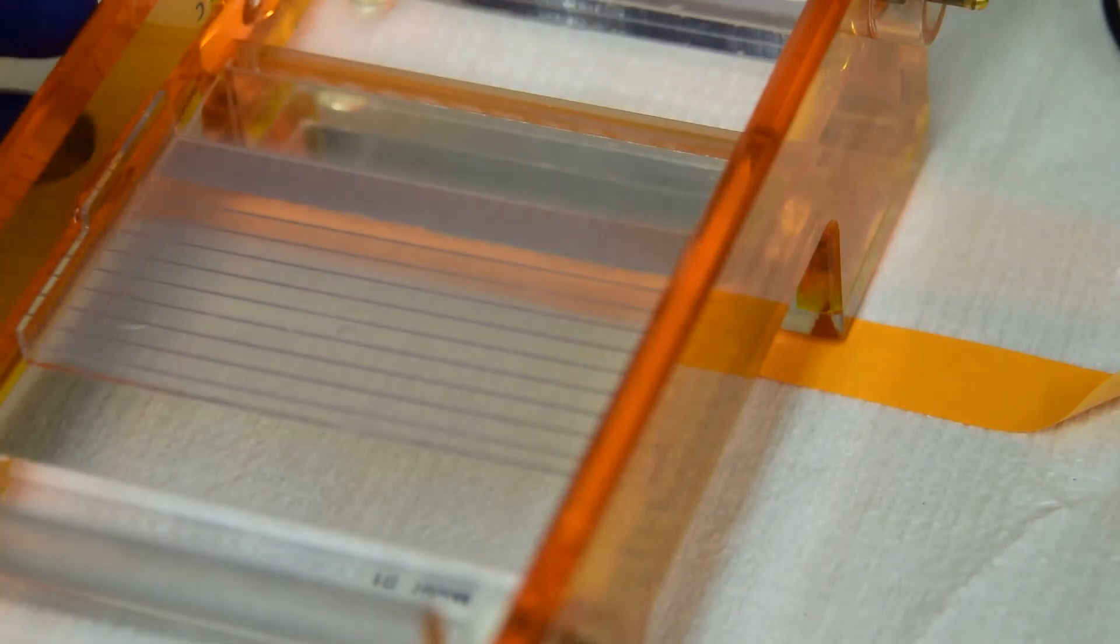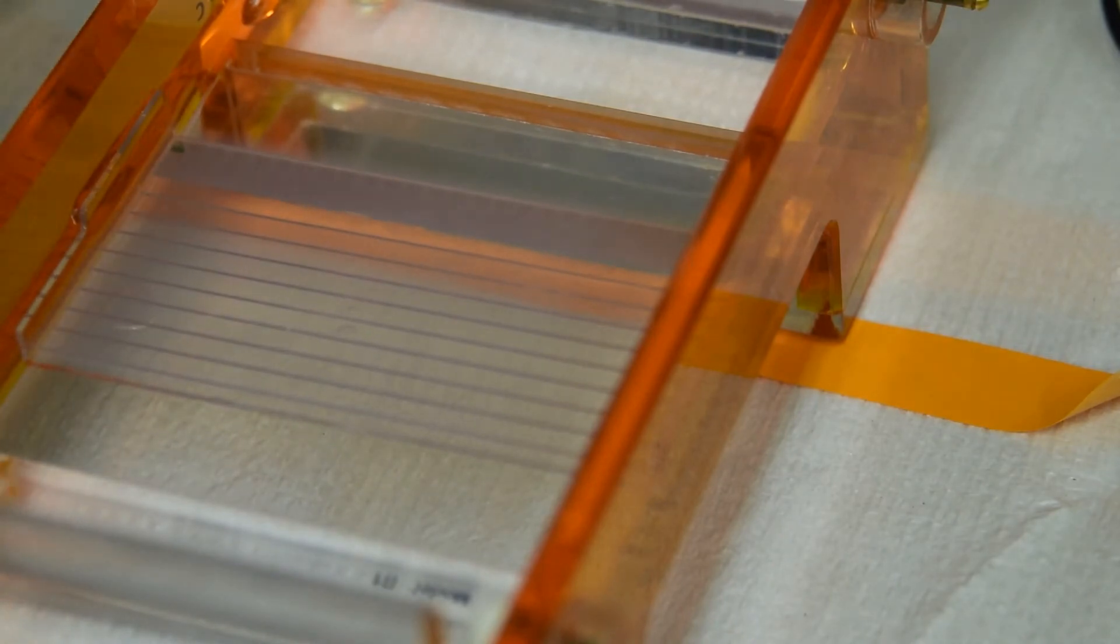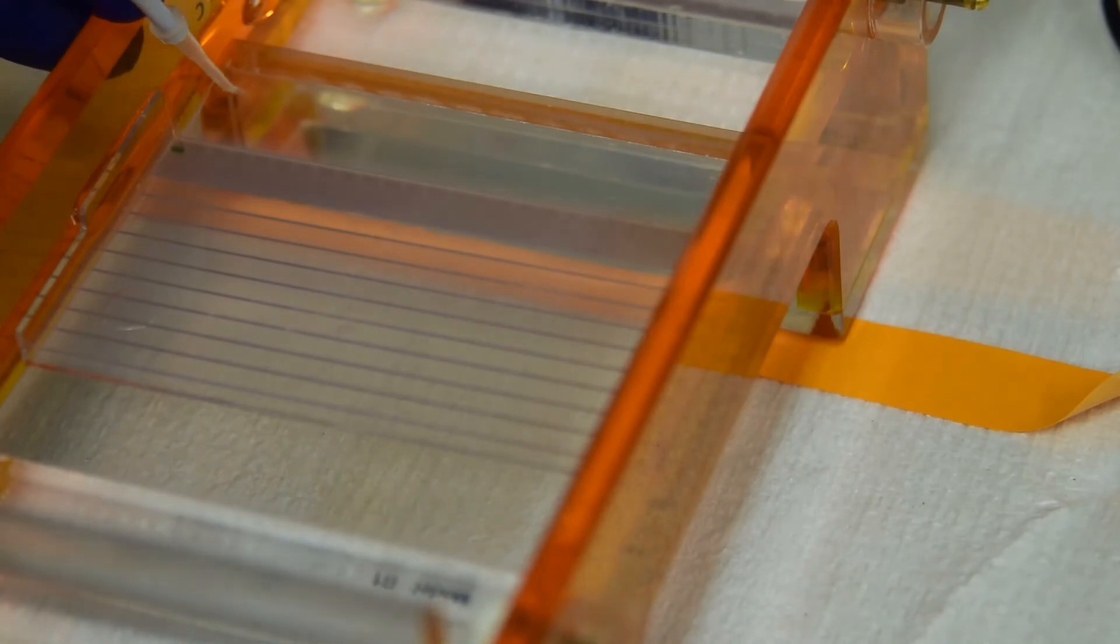Pipette each drop of PCR product into the wells, rinsing the tip between samples by pipetting up and down. You can stabilize the tip with your other hand.